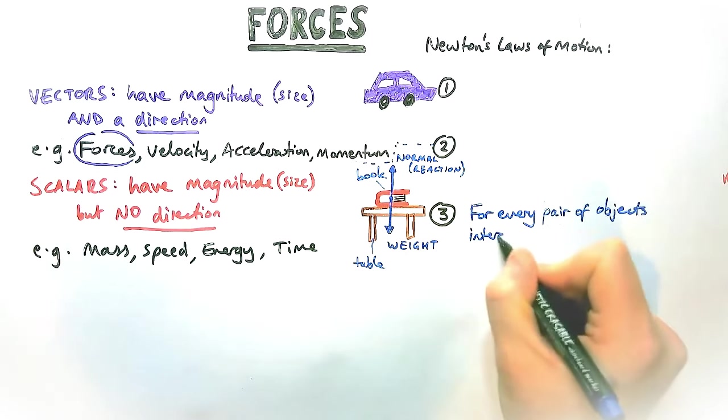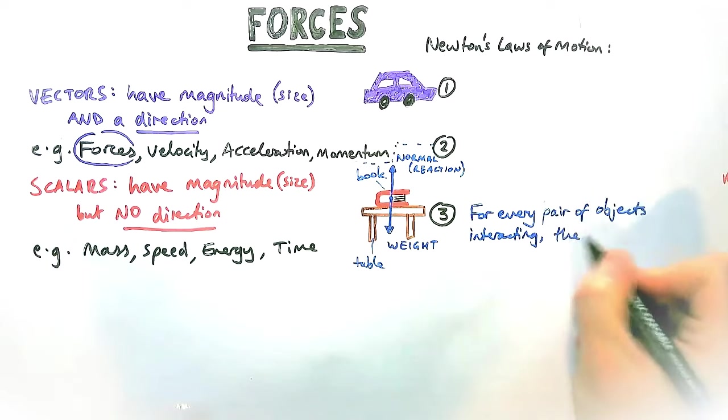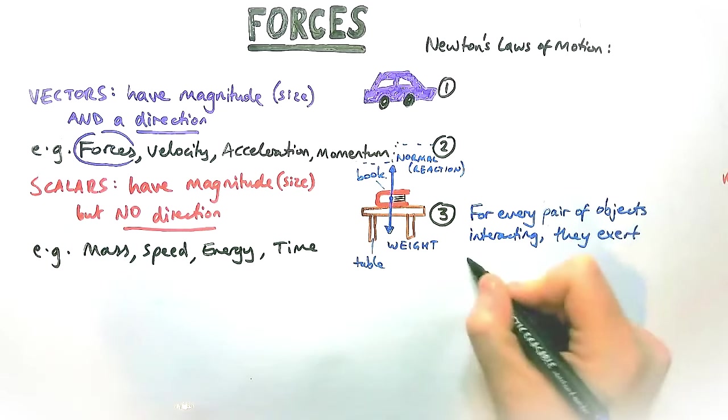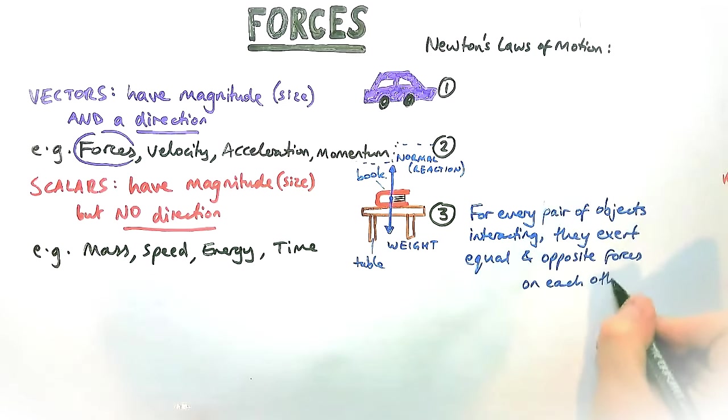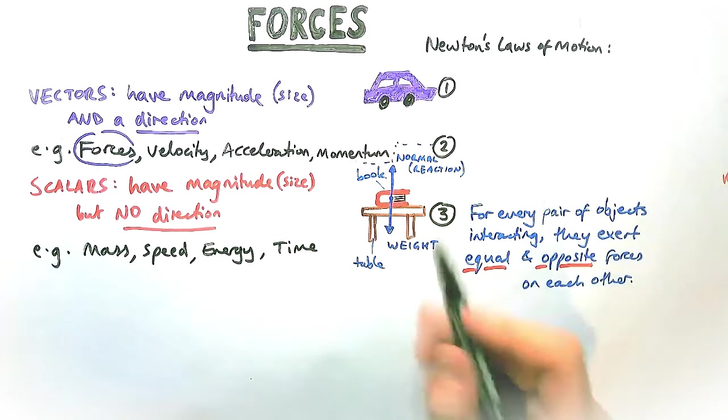What we'd do is we'd say for every pair of objects interacting, that means usually touching each other or coming close to each other, they exert equal and opposite forces on each other. In this example, it's the surface of the book and the surface of the table, but it's always equal, it's always in the opposite direction.